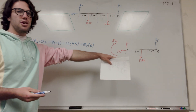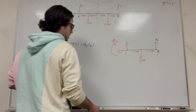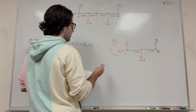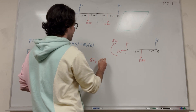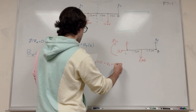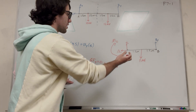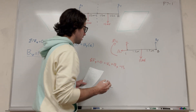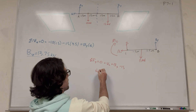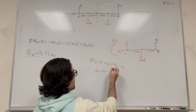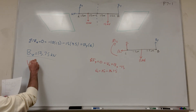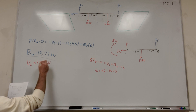Now we go back to our cut free body diagram to find the shear force. Taking sum of forces in the y direction equal to zero: V_c and B_y both point upward, and the 15 kN force points downward. Moving V_c over gives V_c = 15 − B_y = 15 − 13.75, so V_c equals 1.25 kN pointing upward.